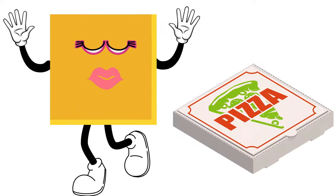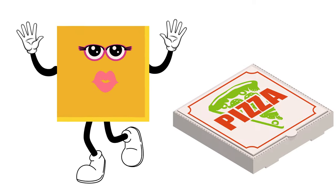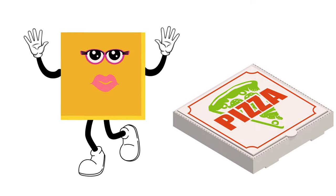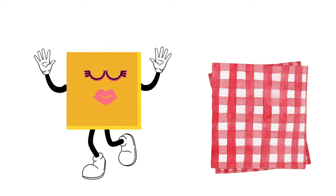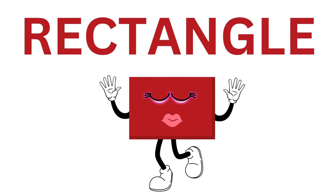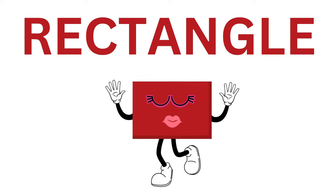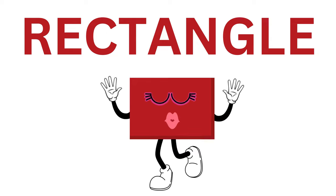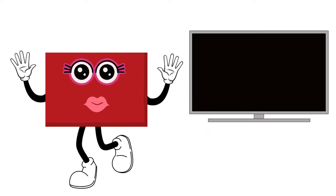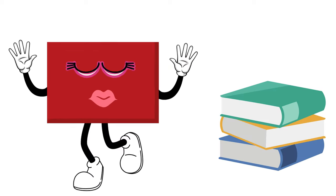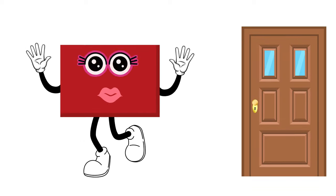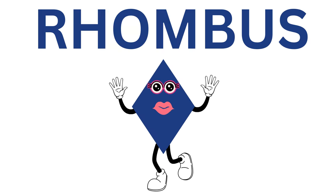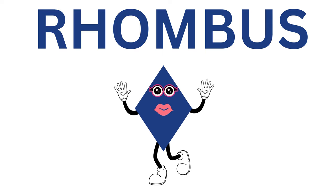...a pizza box, bread, and napkins. I am rectangle. You can see me in a TV, books, and door. I am rhombus. You can see me in...